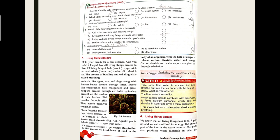Characteristic number six: living things excrete. All living organisms take in food and utilize it in their body. The energy obtained is used for their activities. The unused food and other metabolic processes produce waste material inside the body.